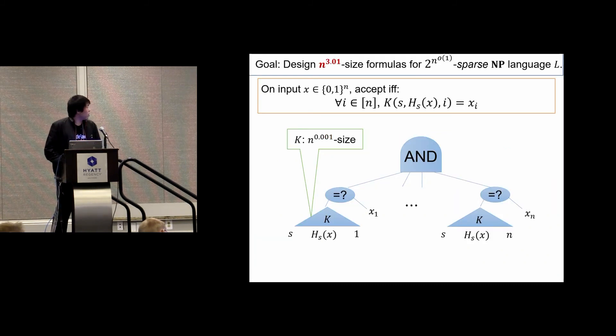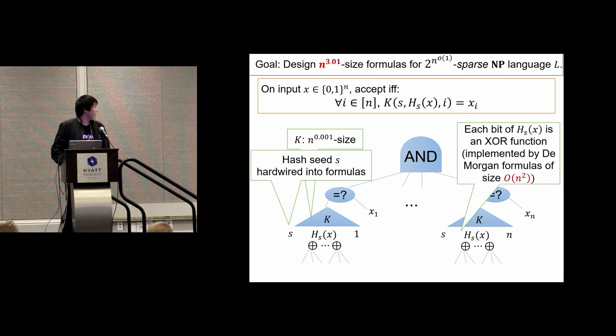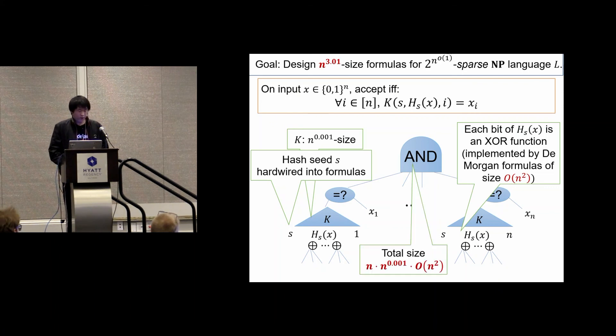Because we want all of them to accept, at the top there is an AND gate. For each sub-formula there is a K oracle. Let's look at the input to this K oracle. The correct hash seed S can simply be hardwired into the formulas. For the hash values, recall that our hash function is linear over F2. So each bit of the hash function is an XOR function over the input bits, which can be implemented by formulas of size n^2. So the final construction has size n times n^0.001 times n^2, which is smaller than n^3.01. This concludes our proof.